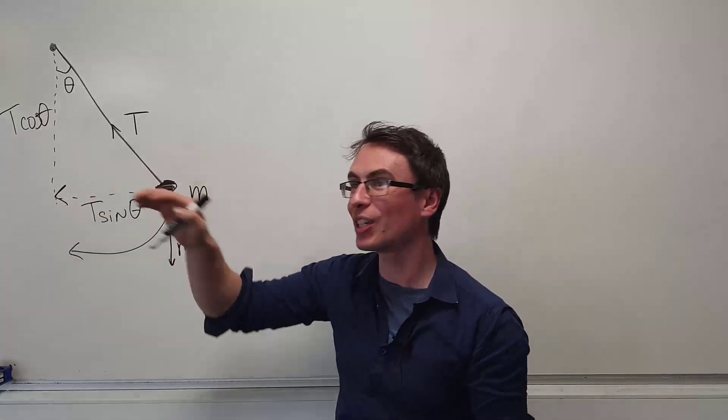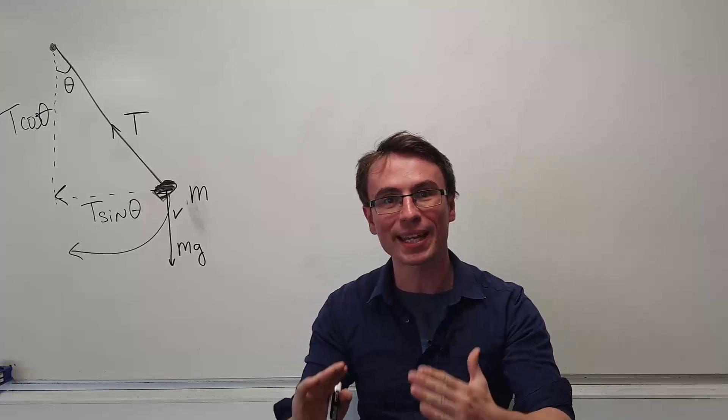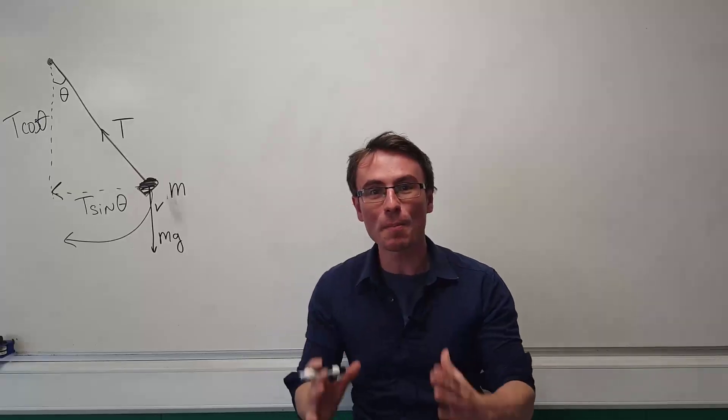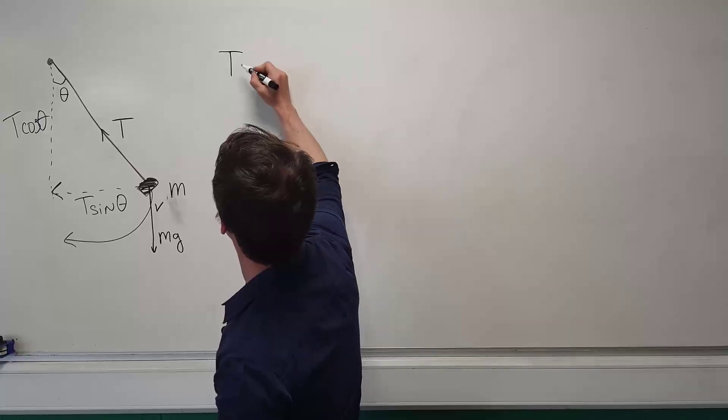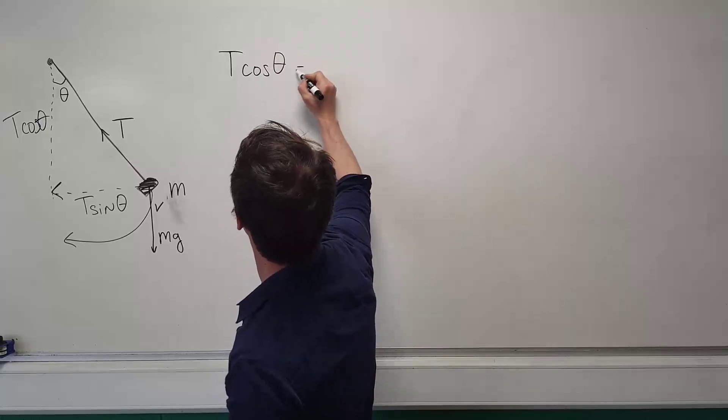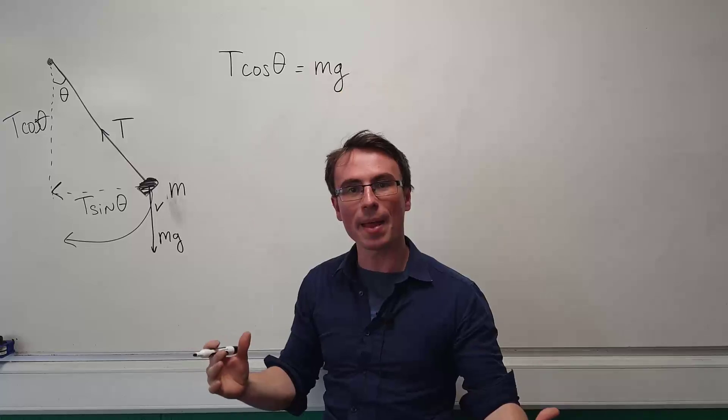Because the object is not actually changing its height but is spinning horizontally, the vertical component of the tension needs to balance out the weight. We can write that T cos theta equals mg.